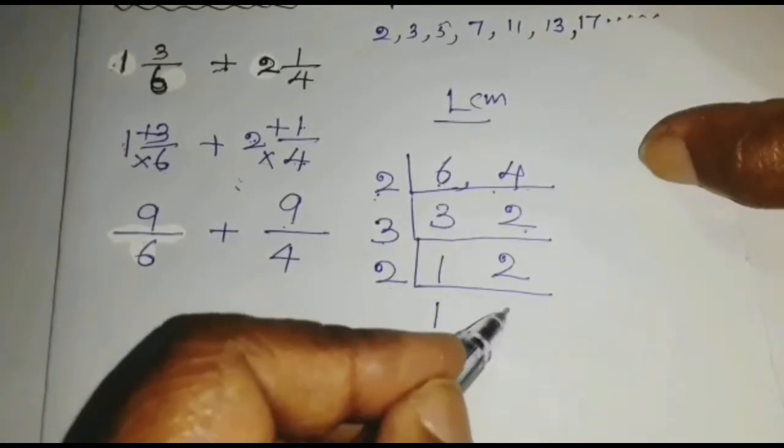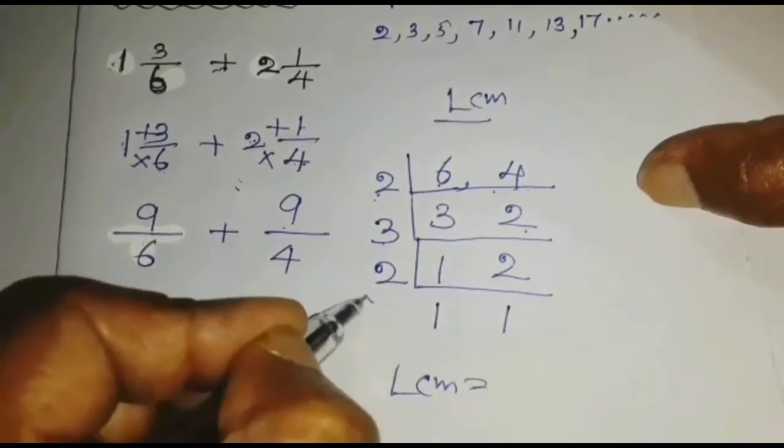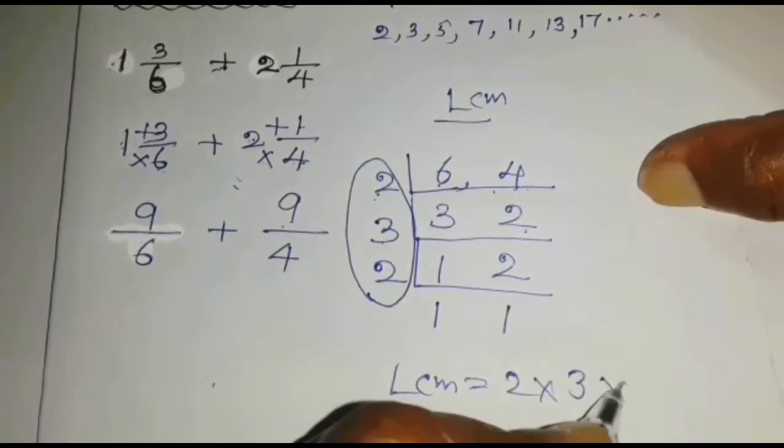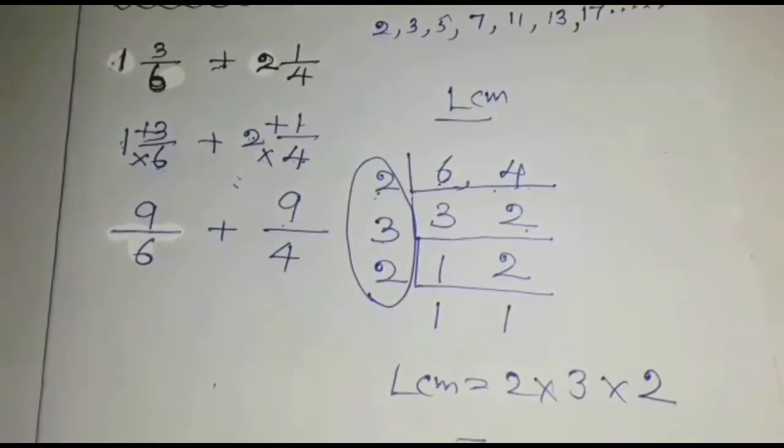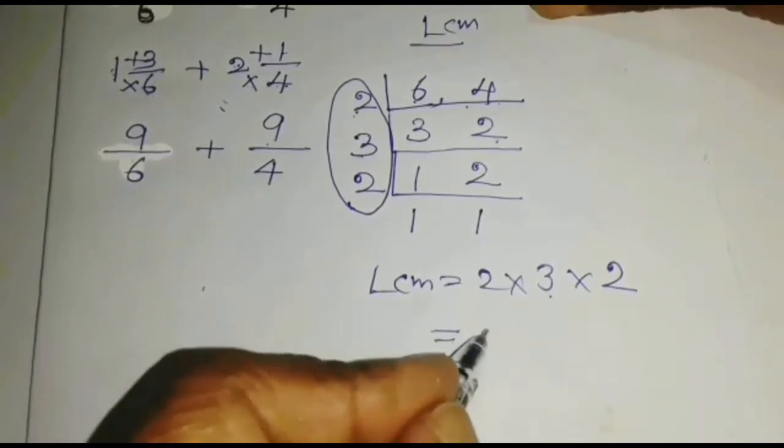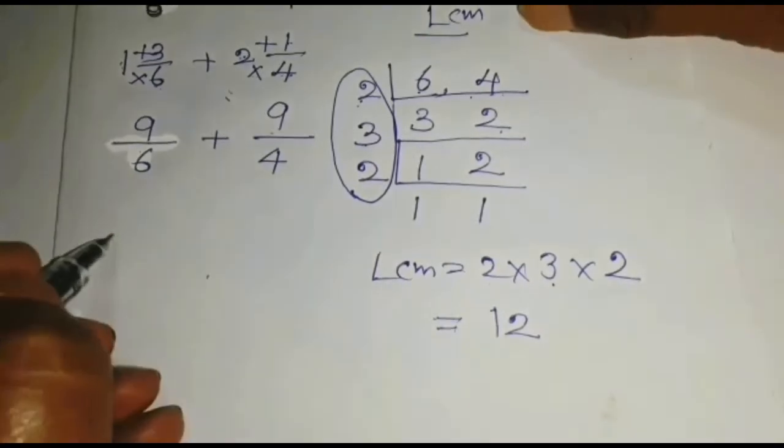Now, we can divide by 2 because 2 is a prime number. 1. 2 divided by 2 is 1. LCM equals, we have to multiply these numbers. 2 into 3 into 2. LCM equals 2 into 3 is 6. 6 into 2 is 12. Now, we know common denominator is 12.